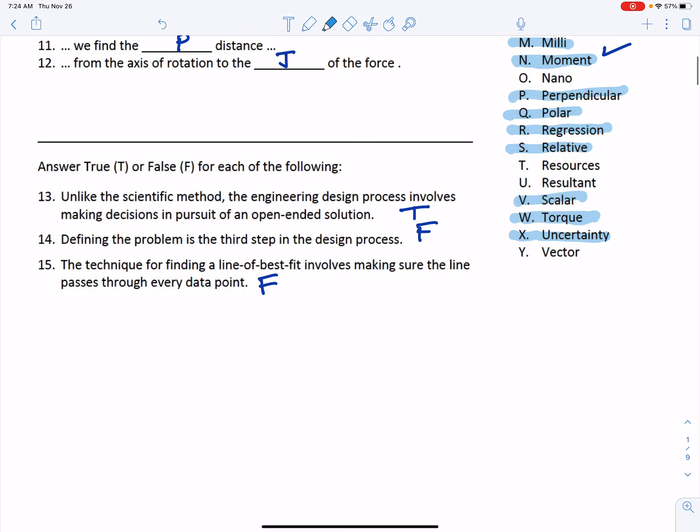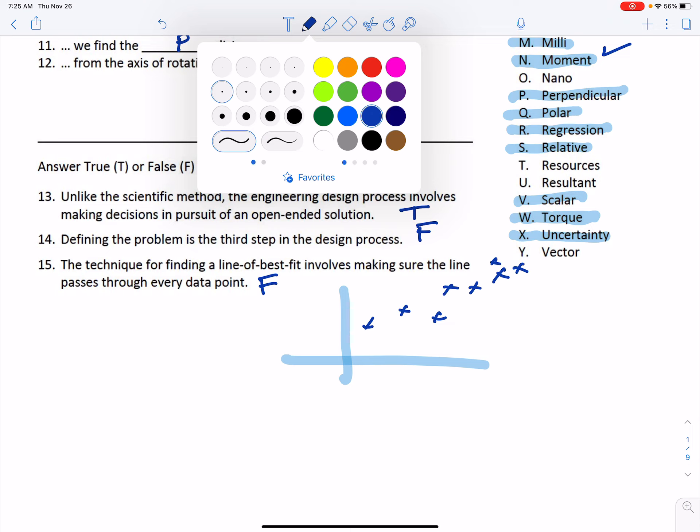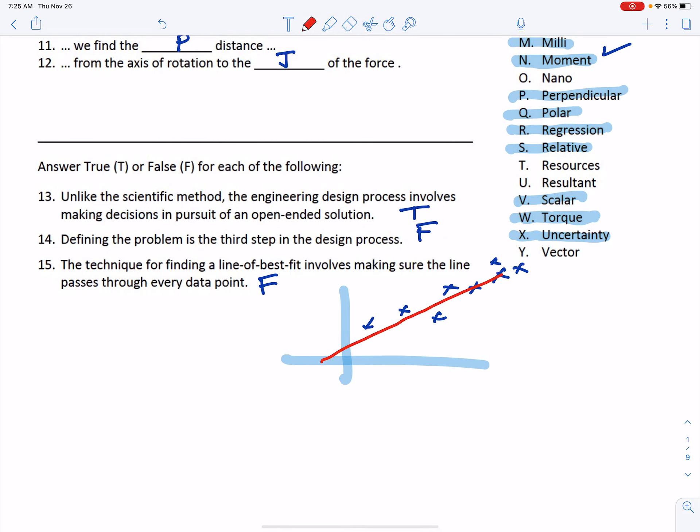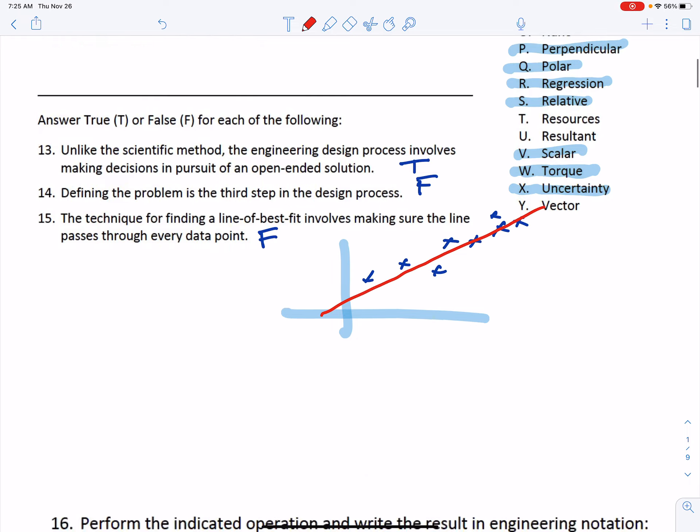The technique for finding a line of best fit involves making sure the line passes through every data point. So we're referring to a linear regression here, and the points won't line up on a line. That's the whole point of regression: you find something that fits most of the data with less error. You'll never have them—if I sketched a picture here, here's a graph and I have data—it's seldom that the data lands right along the line. You're just coming up with some fit that minimizes the error for the set of data. So the answer on that one is false.